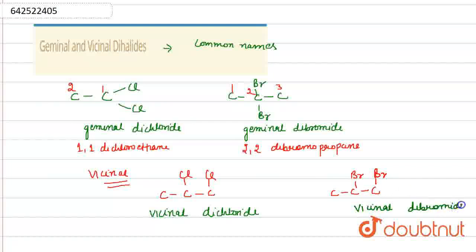Now, when we give their name according to the IUPAC nomenclature, it will be 1,2-Dichloropropane and the name of another compound will be 1,2-Dibromopropane.